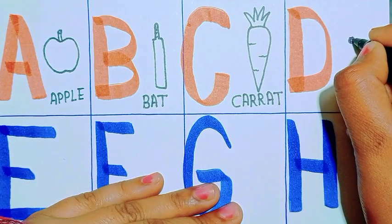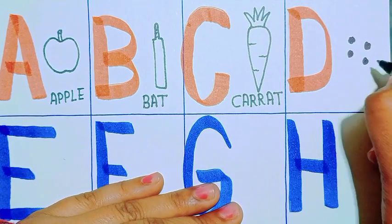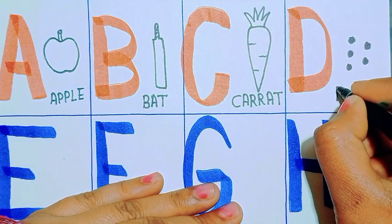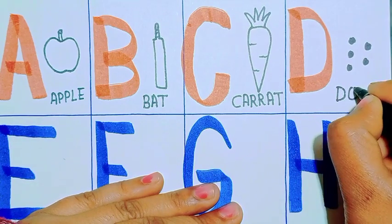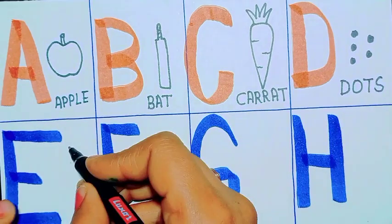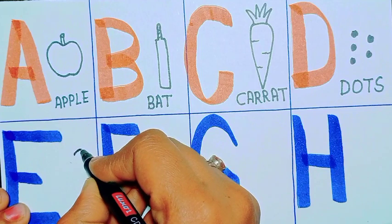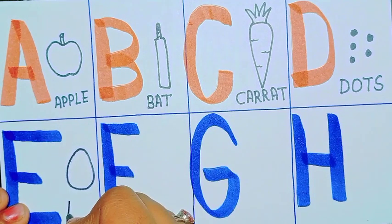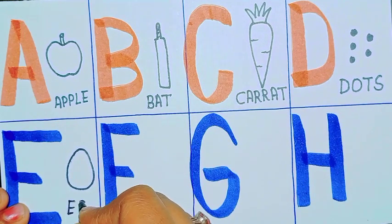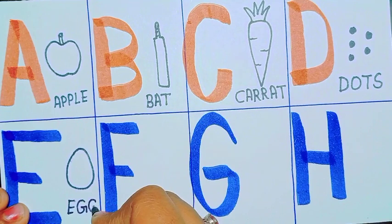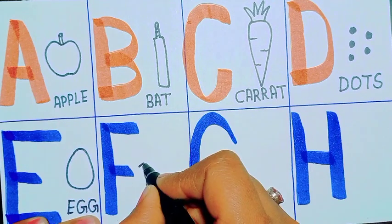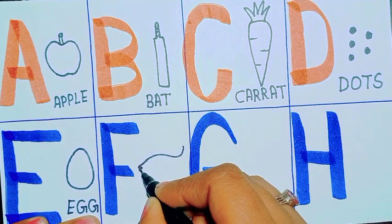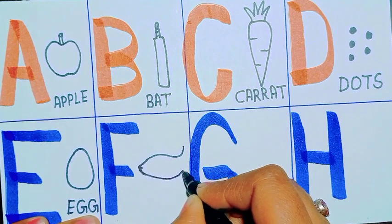D for Dots. Dots. Dots. E for Egg. Egg. F for Fish. Fish drawing.